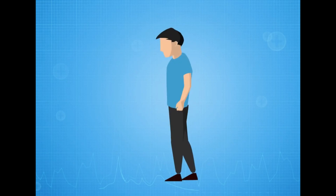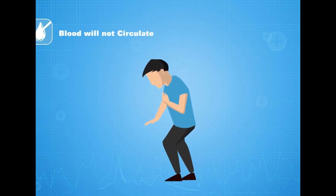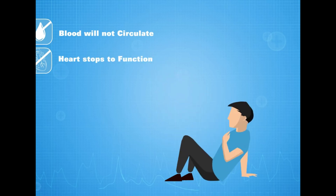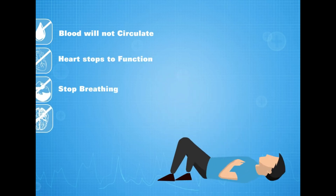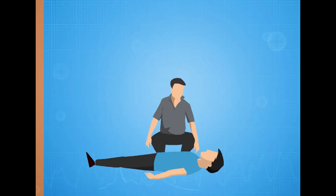When a person suffers cardiac arrest, the blood will not circulate and the heart stops functioning. They stop breathing and lose consciousness. Without oxygen being passed from the lungs to the bloodstream and then pumped around the body by the heart, the person will suffer irreparable brain and other vital organ damage, and will die within minutes.